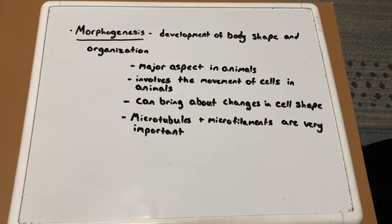Morphogenesis is the development of body shape and organization, and is a major aspect in animals. In animals, morphogenesis involves the movement of cells and can bring about changes in cell shape or allow a cell to migrate throughout the embryo. Microtubules and microfilaments are very important to allow this change in cell shape or migration.